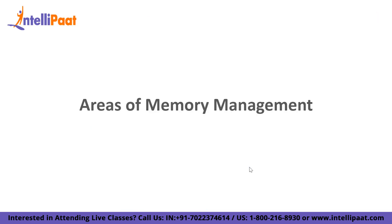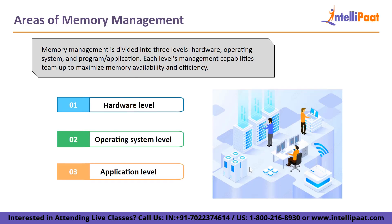Memory management is basically divided into three levels: hardware, operating system, and program application. Each level's management capabilities team up to maximize the memory availability and efficiency. The first one is the hardware level, the second one is the operating system level, and the third one is the application level.